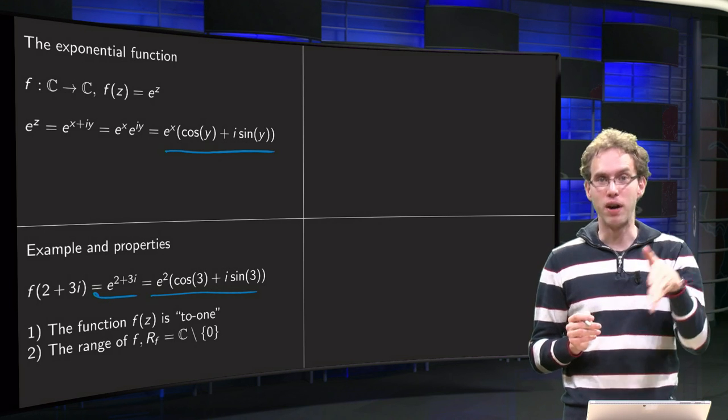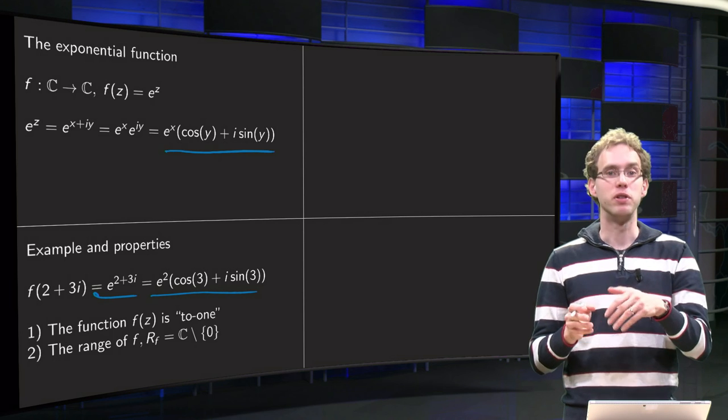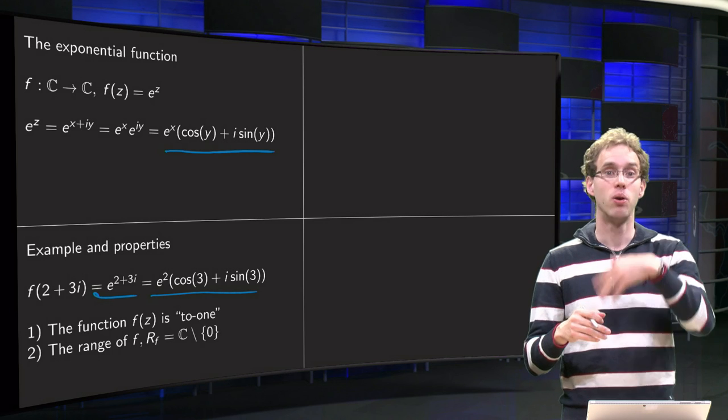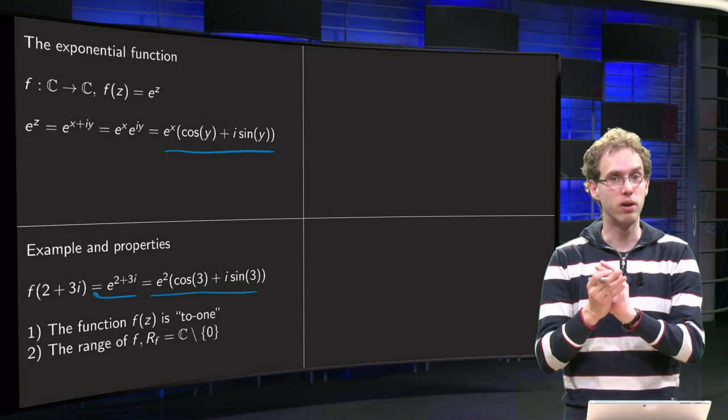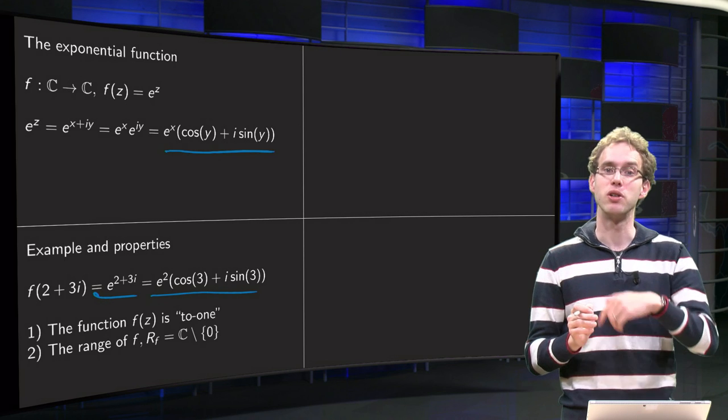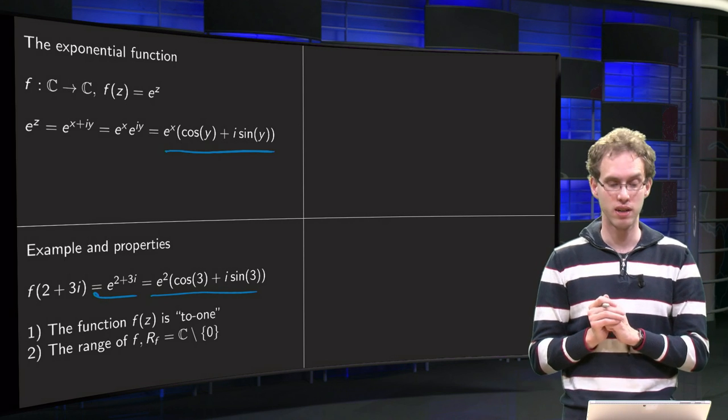You only need to vary y between 0 and 2π by the way, but you can get any argument like that, because y is allowed to vary between minus infinity and infinity, so the argument of f of z can take any value.